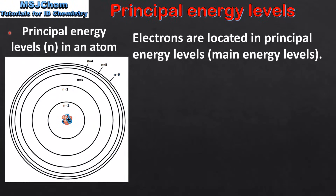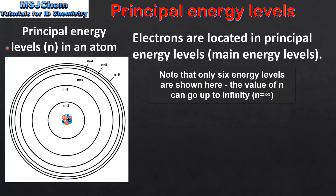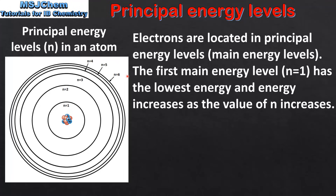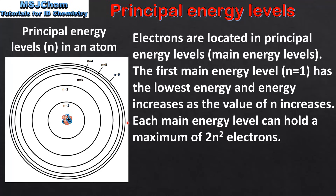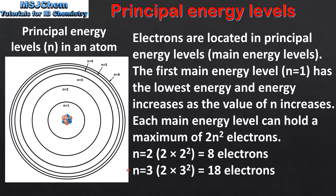Next we look at the principal energy levels. Electrons are located in principal energy levels, also known as main energy levels. On the left we can see a diagram of the principal energy levels in an atom. These energy levels are assigned the letter N. The first main energy level, N equals 1, has the lowest energy, and energy increases as the value of N increases, so N equals 1 is closest to the nucleus. Each main energy level can hold a maximum of 2N² electrons. For example, in N equals 2 we have 2 times 2 squared, which equals a maximum of 8 electrons. In N equals 3 we have 2 times 3 squared, which is a maximum of 18 electrons.